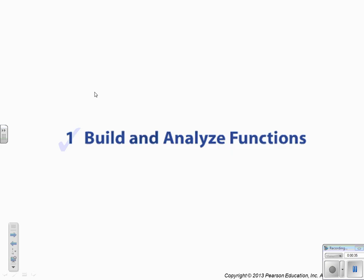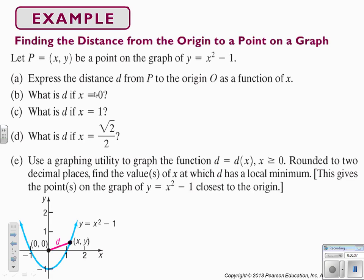Finding the distance from the origin to a point on a graph. We're going to let P equal (x, y) be a point on the graph of y equals x squared minus 1. We're going to express the distance from P to the origin as a function of x.